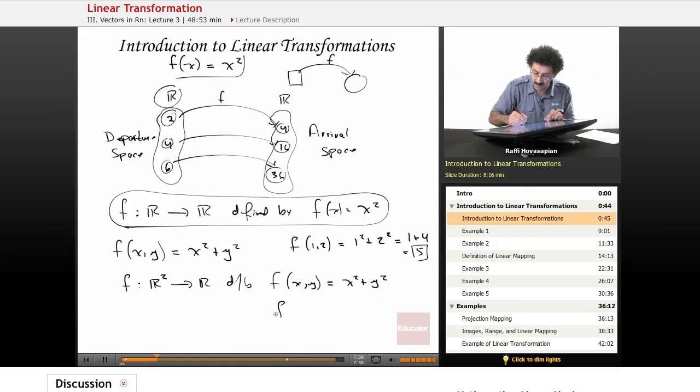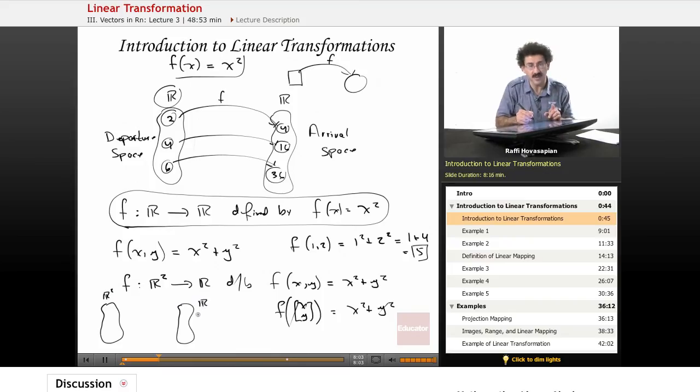I could also write this in vector form, the f of x, y. The vector x, y equals x squared plus y squared. And again, this coordinate x, y is the same as a two vector. So what this symbolism means is that my departure space is now R². It's the space of two vectors. My arrival space is R, the set of real numbers. I've taken a vector, I've done something to the individual components of that vector, and I spit out a number. So these are two different spaces.